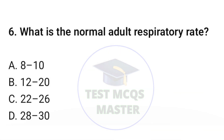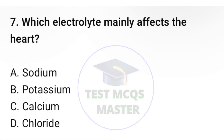Question number six: What is the normal adult respiratory rate? The correct option is B: 12 to 20. Question number seven: Which electrolyte mainly affects the heart? The correct option is B: potassium.